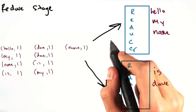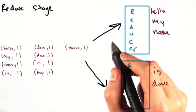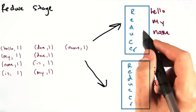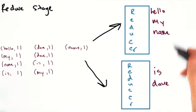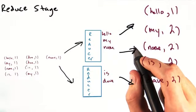So if we ran the job with just one reducer, that reducer would process all the keys. But if we ran the job with two reducers, one reducer might process half the keys while the other reducer processes the other half. So let's go back to our word count example.